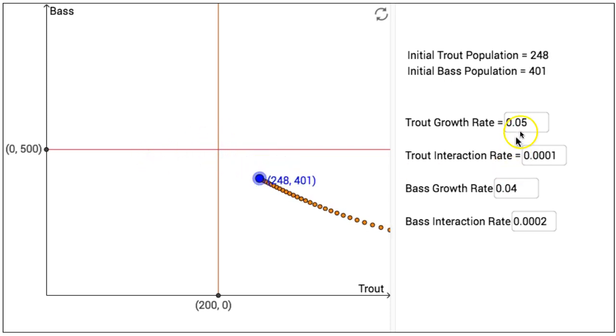Now other things you can explore, perhaps if I click on the trout growth rate on the right hand side, let's change that growth rate to 6%, and then press enter, and let's change the bass growth rate to 3%. And so we get a little bit different behavior.